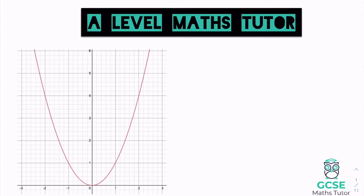We're going to look at this graph of x squared. When it comes to a graph and differentiation, hopefully you already know that it's about finding the gradient at a specific point on a curve. For this graph we're going to say that y equals f of x, and since I've chosen the graph of x squared, y also equals x squared.